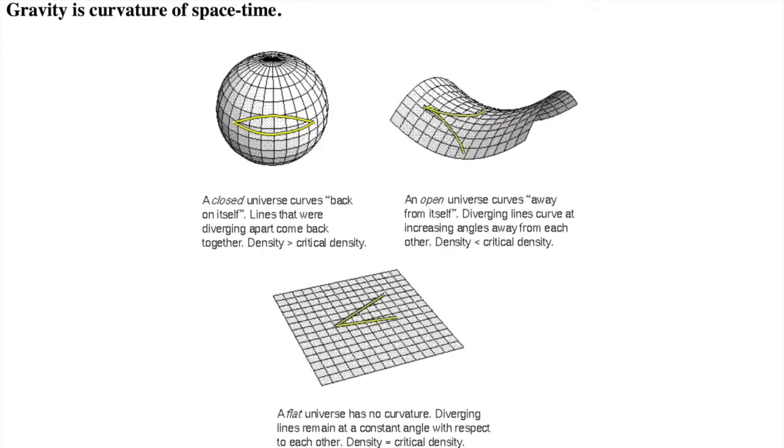The boundary case between these two is the flat universe. The flat universe is one that has the critical density or boundary case density between the closed universe with a density greater than the critical density and the open universe with a density less than the critical density.